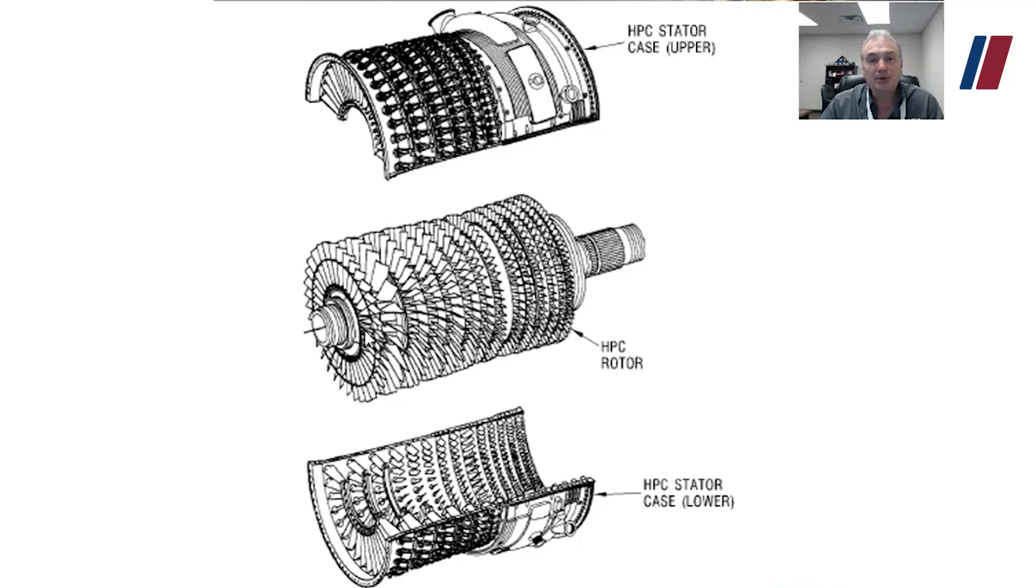The rotor is made up of discs and spools. A disc is basically like a CD disc. It's one disc that mounts only one set of blades. A spool could mount several stages of blades, and typically the blades are mounted circumferentially on spools, whereas on a disc they're mounted axially.